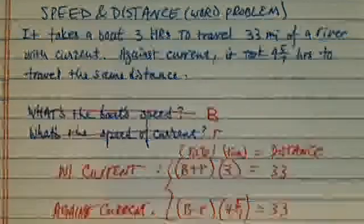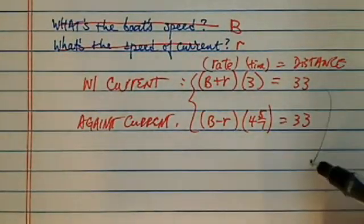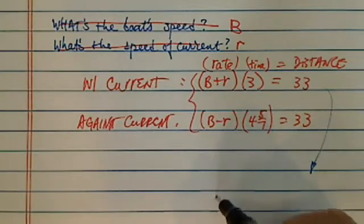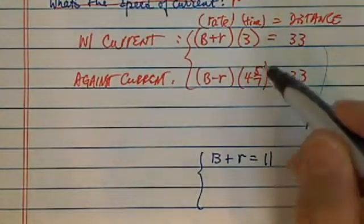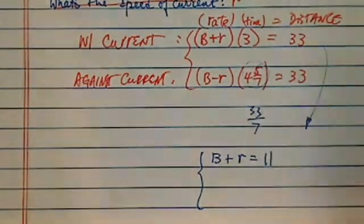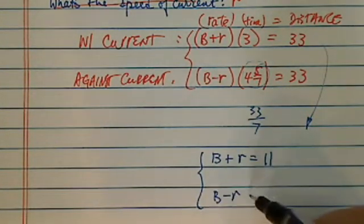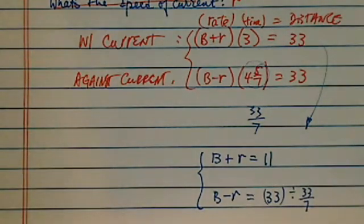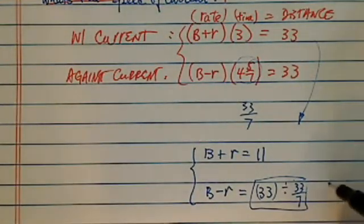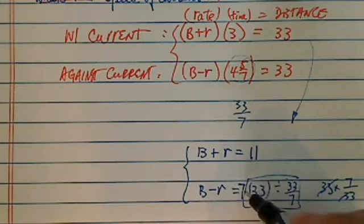From there, 90% of this problem is done — we just have to solve for the variables. For the first equation, let's simplify: divide by three and we get b plus r equals 11. That looks a lot prettier. For the second equation, simplify using 33 over 7: divide 33 over 7 on both sides, and remember dividing a fraction means multiplying by the reciprocal, so 7 over 33 cancels out, giving us b minus r equals 7.